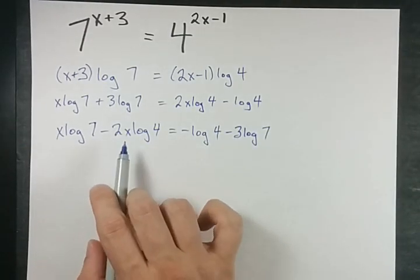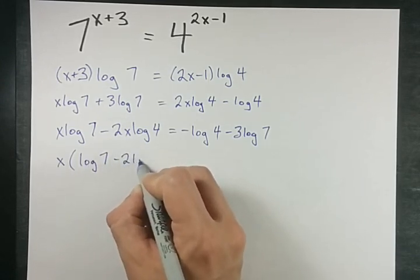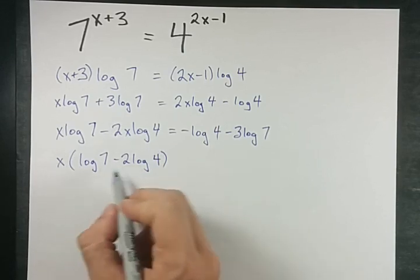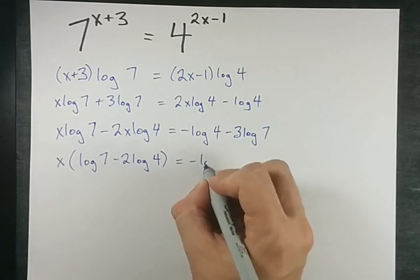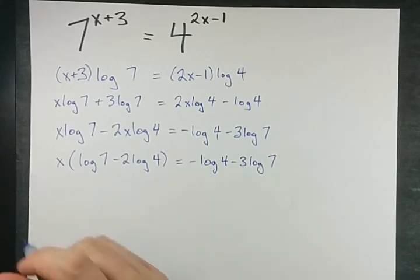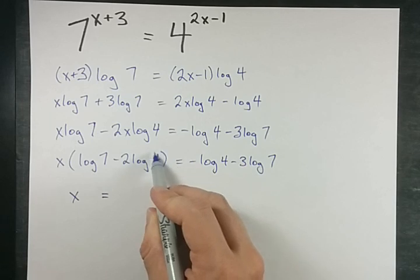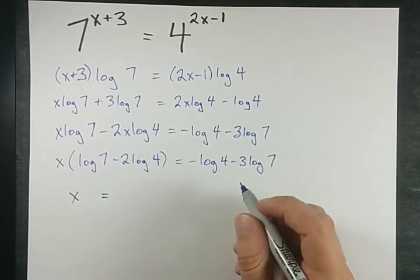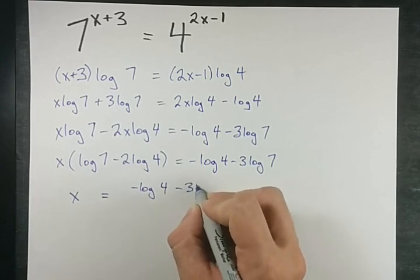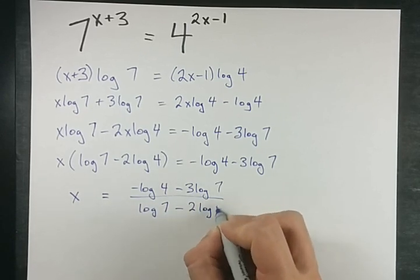The reason I'm collecting my x's on one side is because I can now factor x out. x is common to both of these terms, so it can be pulled out and everything that remains is in brackets. I still have my negative log 4 minus 3 log 7 on the right-hand side. And to solve for x, all I have to do is divide both sides by this massive thing in brackets. So my final answer is negative log 4 minus 3 log 7 over log 7 minus 2 log 4.